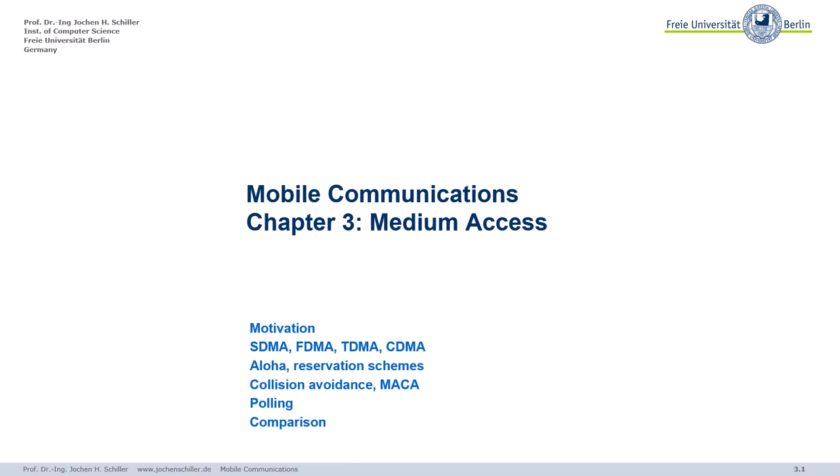Welcome to the third chapter of mobile communications. In this chapter I will cover medium access. Medium access is very important because the spectrum, the frequencies we can use, as you saw from the table in the first chapter, is really a scarce resource. So if many people want to access a mobile telecommunication network, it might simply be crowded — we will have an overloaded system and maybe you cannot use the system at all. This is one reason why we have to have different medium access schemes.